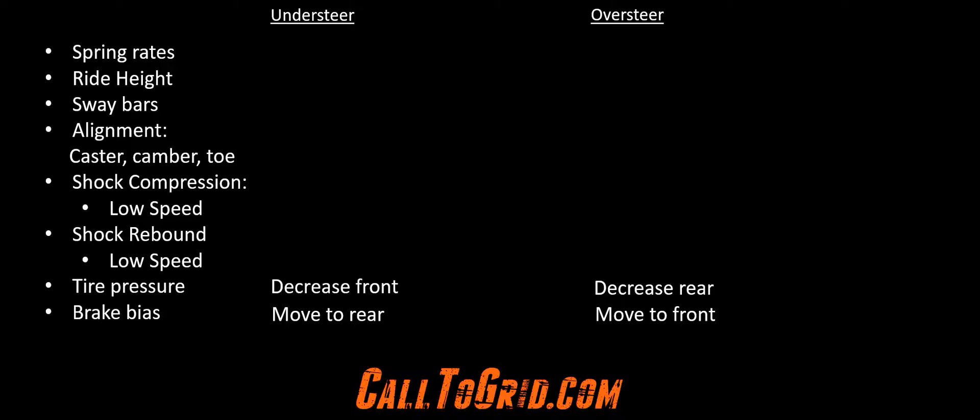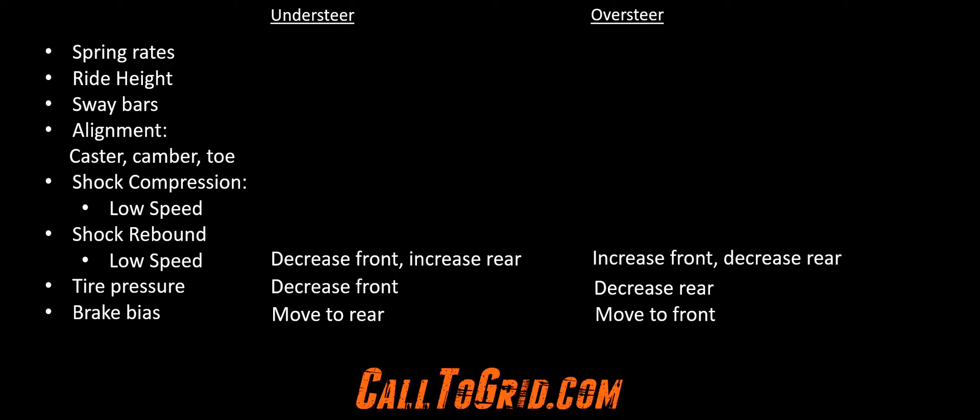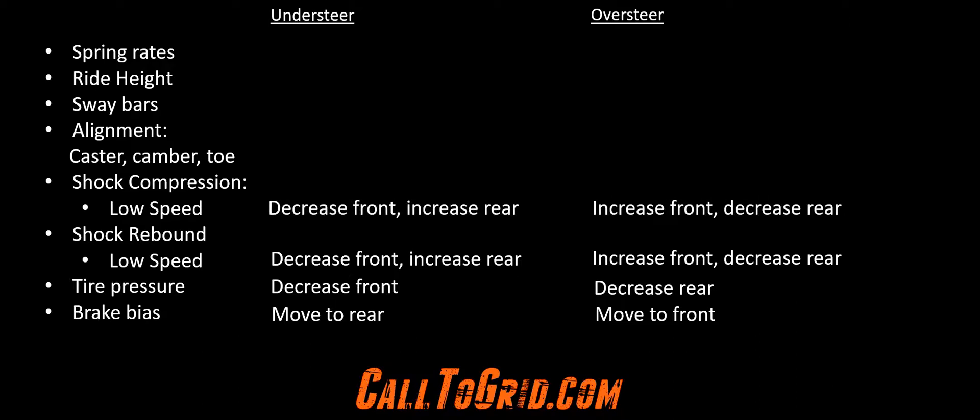In addition to tire pressure, shocks are where you will spend most of your time tuning at the track if your car already has a pretty good basic setup. For understeer, consider running a less firm front low speed shock rebound or running more firm on rear. For oversteer, run more firm up front or less firm on rear. If you're fortunate enough to have double adjustable shocks, run a less firm front low speed shock compression or increase rear to correct for understeer. To correct for oversteer, do the opposite — run more firm front or less firm rear low speed shock compression.